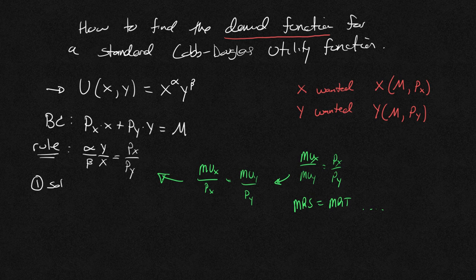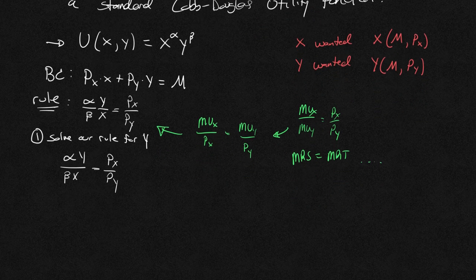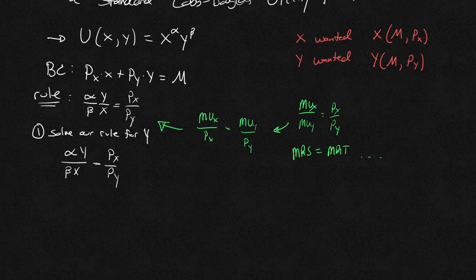The first is going to be solve our optimization rule. Solve our rule for y. I want you to take that as your first step. So if I have alpha y over beta x equals to px over py, I'm just going to solve this. I'm going to solve this for y. I'm going to multiply both sides by x beta.